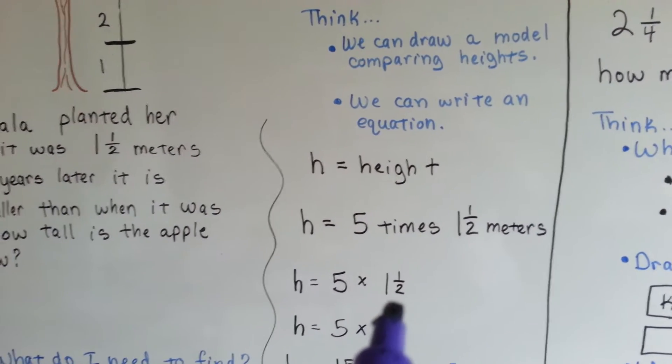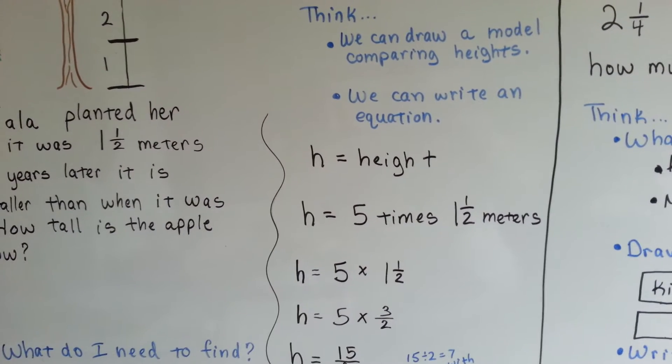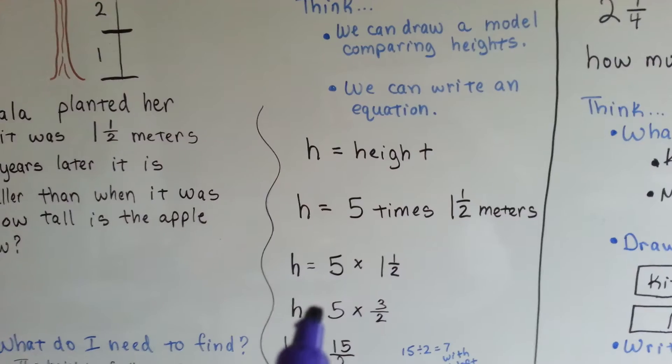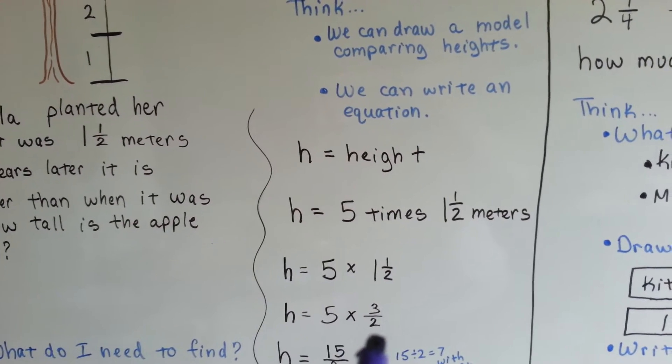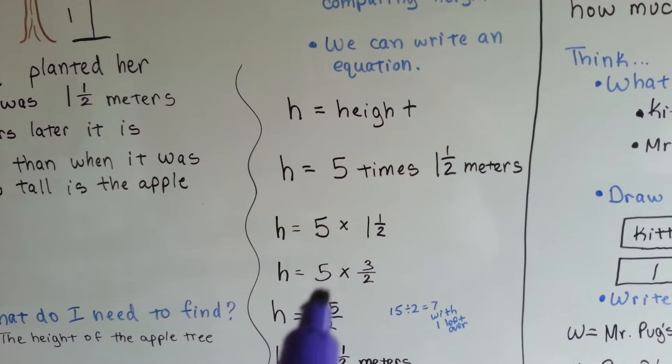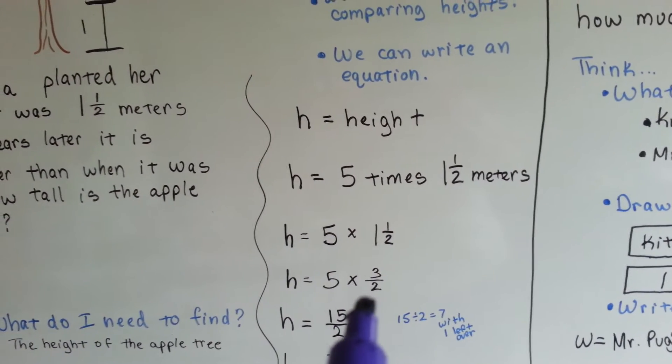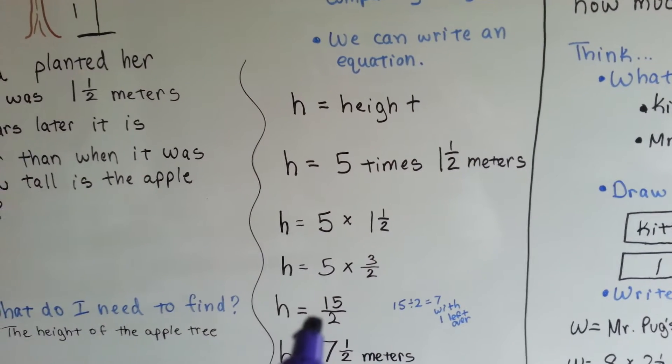We turn the one and a half into an improper fraction. One times two is two, plus the one numerator is three, giving us three halves. Five times three halves. We multiply five times the numerator, which is fifteen, and put that over the two denominator, and we have fifteen halves.